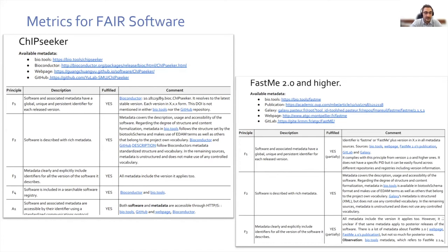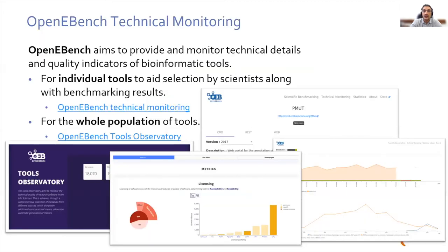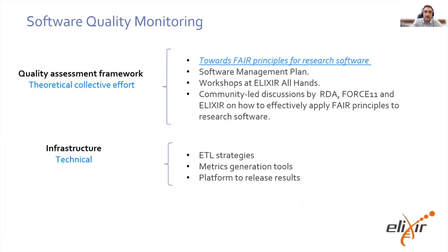This effort has been done primarily by OpenEBench and the Software Observatory led by BSC, the Barcelona Supercomputing Centre, again with ELIXIR. In this context, you can see different principles of FAIR and how they can be connected to different outcomes treated by metadata of the software. The key connection between the SMP and this work is that there is a clear connection between the questions and the principles. OpenEBench provides technical monitoring of bioinformatics tools in general, which can also be done by benchmarking individual tools or a whole population of tools via the Tools Observatory.